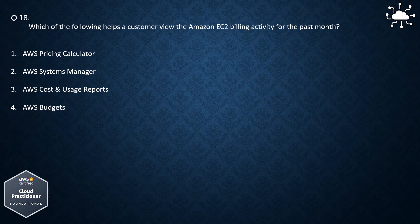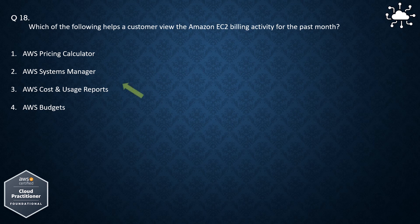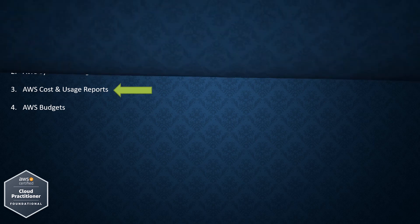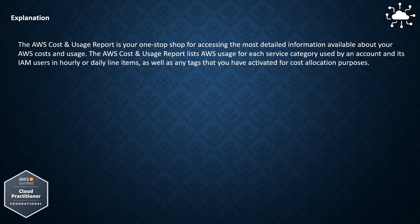Question 18. Which of the following helps a customer view the Amazon EC2 billing activity for the past month? 1. AWS Pricing Calculator, 2. AWS Systems Manager, 3. AWS Cost and Usage Reports, 4. AWS Budgets. The correct answer is AWS Cost and Usage Reports. The AWS Cost and Usage Report is your one-stop shop for accessing the most detailed information available about your AWS costs and usage. It lists AWS usage for each service category used by an account and its IAM users in hourly or daily line items, as well as any tags that you have activated for cost allocation purposes.